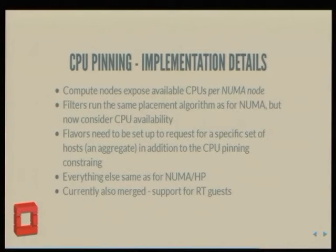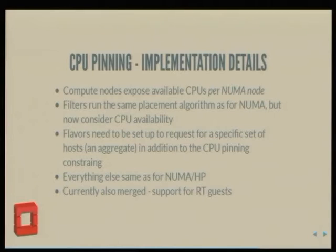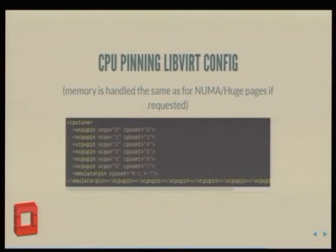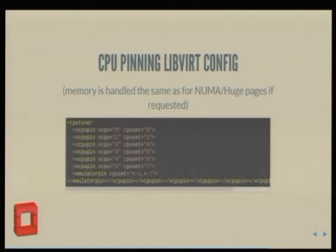The placement algorithm goes through all permutations of possible NUMA nodes, which can get slow if you have a lot of NUMA nodes, but we're not there yet. This is the same as confining to a NUMA node, except you confine to a single CPU — basically giving the VM dedicated CPUs. Nova tracking makes sure you never share a CPU on that particular dedicated host.